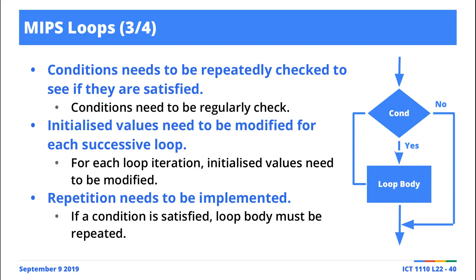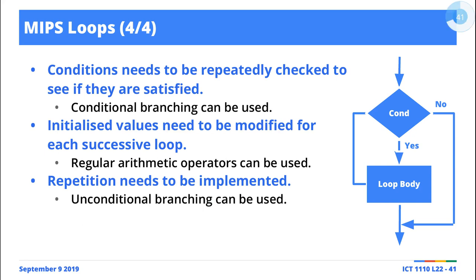If it evaluates true, you execute the loop body, but then you go back to check the condition. You have initialized values that you modify, go back and check the condition — if it is satisfied, come back, execute the body, modify the values, go back to the condition. You repeat until this thing evaluates to false, at which point you get out of the loop. You could be checking if the value is greater than, less than, or equal to a predefined value using BEQ, BNE, BGT, or BLT.